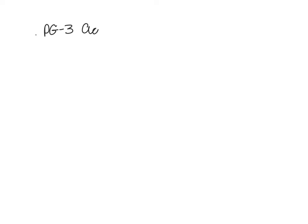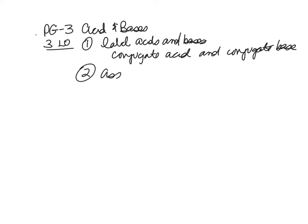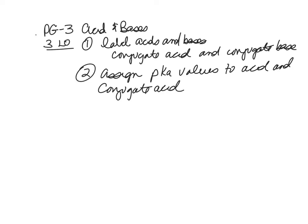For the pre-lab exercise PG3, we're going to be talking about acids and bases. You basically have three learning objectives in this activity. One, you'll need to be able to label acids and bases, conjugate acids and conjugate bases. We'll talk about how to define them and label them in an acid-base reaction. The second learning objective is to be able to assign pKa values to your acid and your conjugate acid. And then the third learning objective is to determine the direction of your equilibrium arrow.